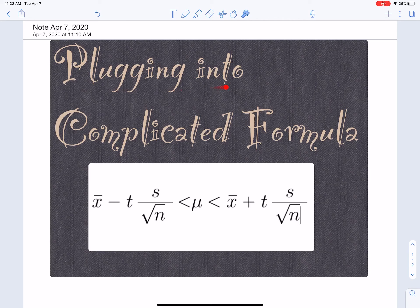Alright, so I want to talk about plugging into complicated formulas. Here we have this formula: x̄ minus t times s over square root of n. This is a compound inequality. You have the same thing on the right but with a plus sign. Let's see how we can plug into this inequality.